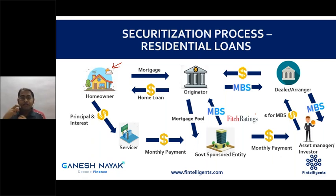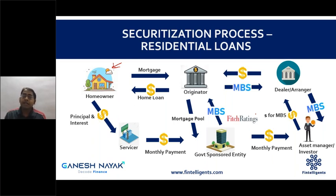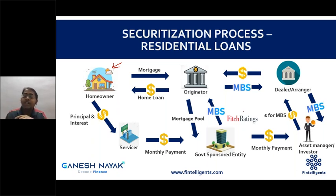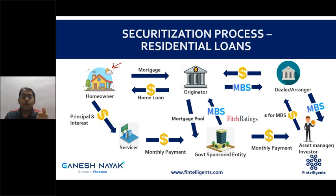Credit rating agencies had previously only rated bonds. When securitization took off, they saw an opportunity to enter this market and earn fees. However, they did not fully understand the actual risk in these products — they rated MBS similarly to bonds and consequently passed incorrect information to other participants, who relied on those ratings to make buy decisions.